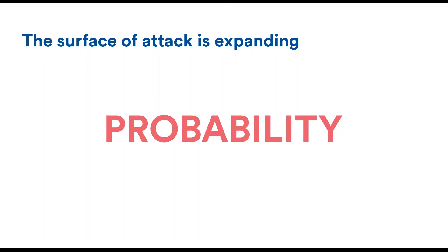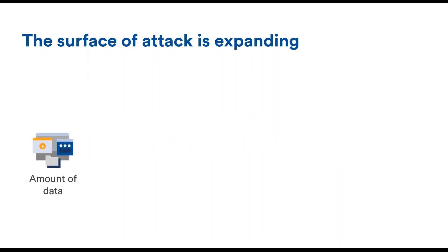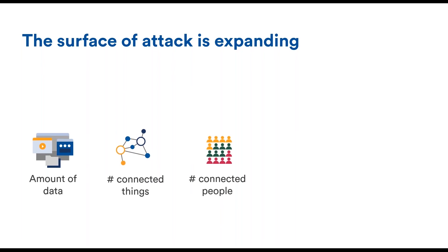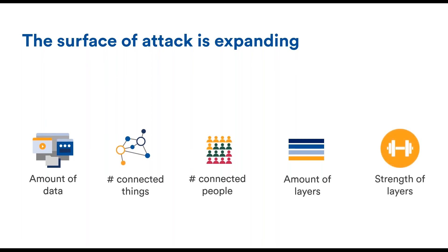As opposed to physical security, geographical boundaries are almost non-existent when it comes to cyber attacks. The expanding attack surface means that sensitive data shared between people and systems grows exponentially year over year. The same goes for the amount of connected things interacting with each other, and the number of people accessing that data. The probability of something bad happening will be effectively reduced by the amount of protection layers you put in place and the strength of each layer within a system or network.